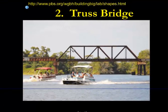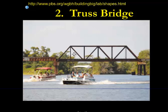Truss bridges are just bridges that have these squares on the side. It's still a road like the beam, but it's made extra strong by putting these squares on the side and then trusses right through them to make these squares turn into triangles, which are now stronger. So we have two triangles here in each square, and that's what these trusses do — they make these bridges extra strong.